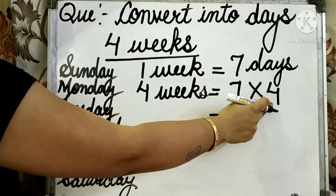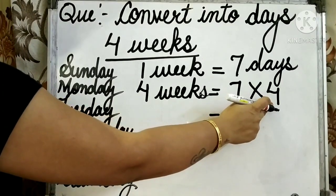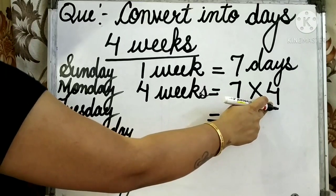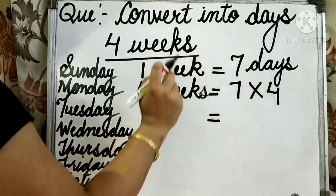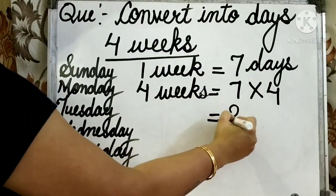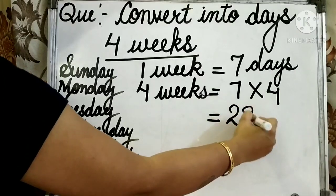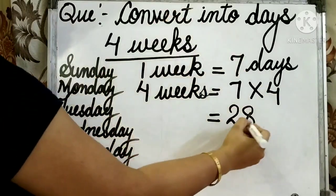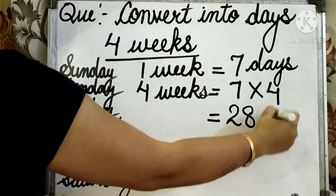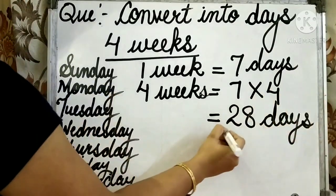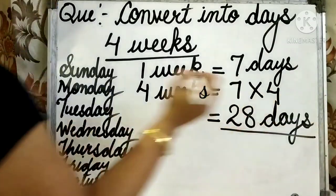7 fours are 28. We know: 7 ones are 7, 7 twos are 14, 7 threes are 21, and 7 fours are 28. So, in 4 weeks, we have 28 days.